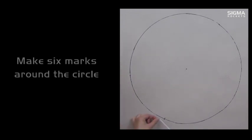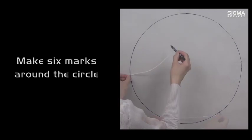Using the string and marker, measure six points around the circle. You do not have to change the length of the string.